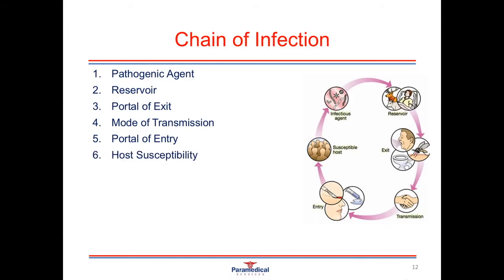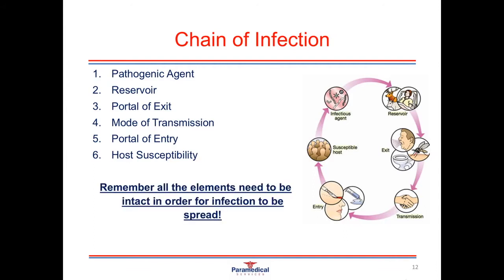The sixth and final link in the chain of infection is host susceptibility, which determines whether someone will or will not become infected. Factors affecting susceptibility include age — the very young and very old generally have lower immune systems. Those who are immunocompromised due to poor nutrition or health, drug abuse, alcohol abuse, or various medical conditions will also have a lower immune system. All six elements must be intact for infection to spread from one individual to another.